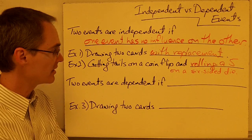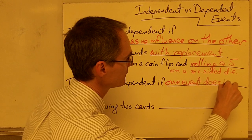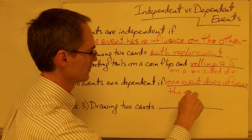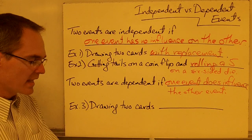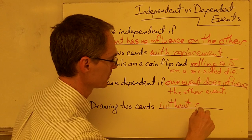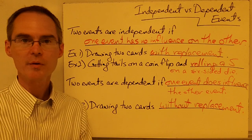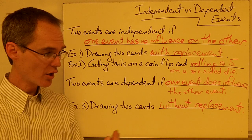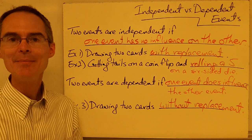Two events are dependent if one event does influence the other event. For example, if we draw two cards from a standard deck of cards without replacement. If I draw the first card, but I don't put that card back in the deck before I draw my second card, then having drawn that first card influences the second event, because now I have fewer cards in the deck. That's an example of dependent events.